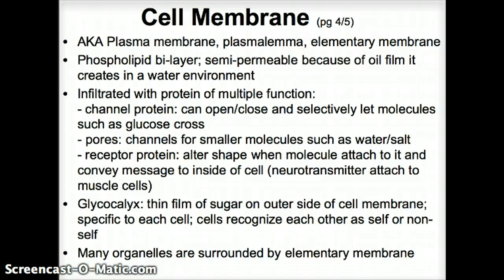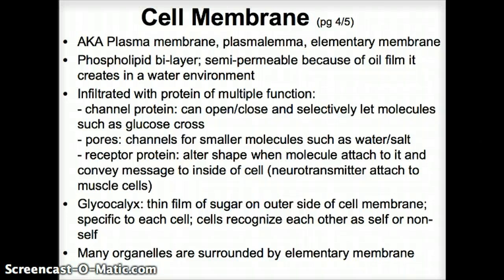Surrounding the cell is a glycocalyx — a thin film layer of sugar molecules on the outside of the cell membrane. It's very specific to each cell and helps cells be recognized as your own cells or not your own cells. So cells from non-self can be recognized through the glycocalyx, which becomes very important when we talk about the immune system, for example.